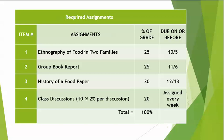The required assignments — we have four different assignment areas. First, you're going to have to write an ethnography of food in two families, which is worth 25% of your grade, and that's due on or before October 5th. There is the group book report, which is 25% of your grade — you will be doing that report with another class member, yet both of you are required to read both books, and that is due on November 6th. There'll be a history of a particular food paper, which is 30% of your grade. And then there are class discussions, usually every week, each worth 2% of your grade.